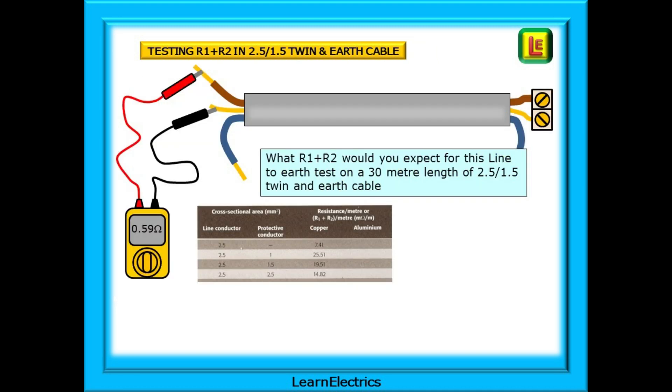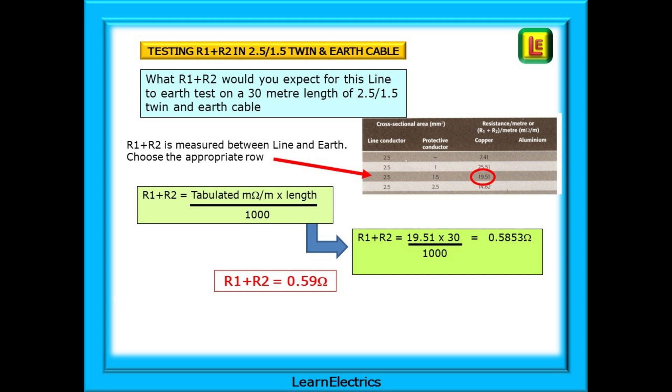We can move on and test two conductors now. Suppose we had a circuit installed in 2.5 square millimeter twin and earth with a length of 30 meters. For standard twin and earth, the line will be 2.5 and the earth or CPC 1.5. Choosing the correct row from the table, we see that the value to apply is 19.51 milli-ohms per meter length of the twin and earth cable.